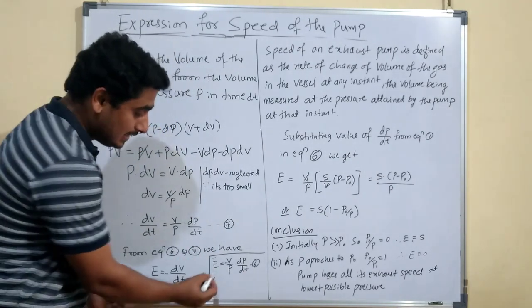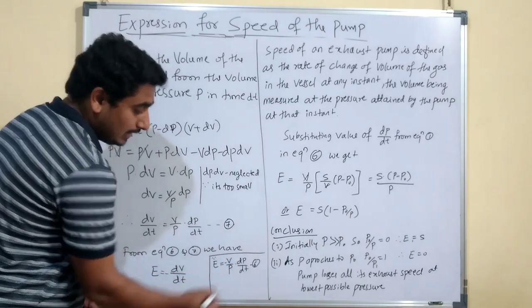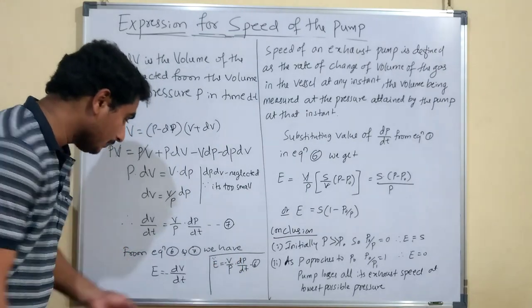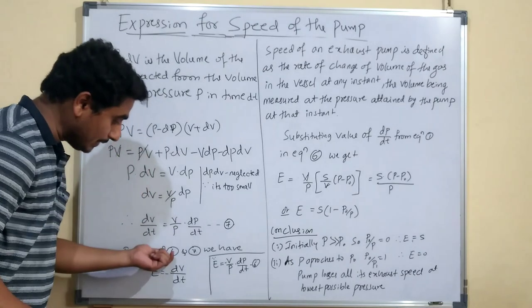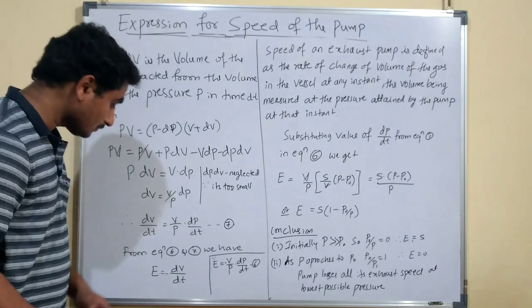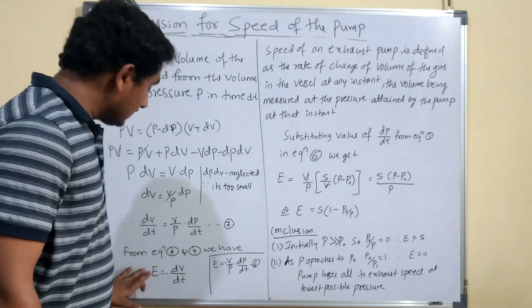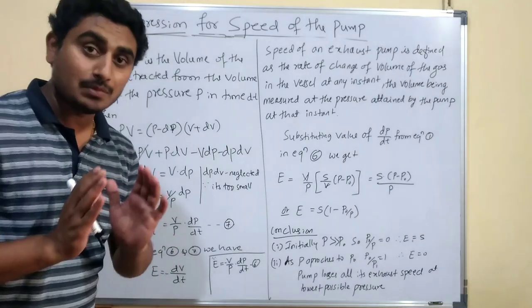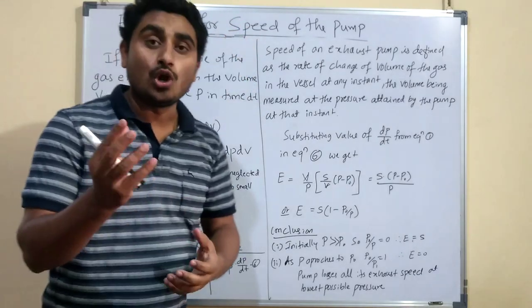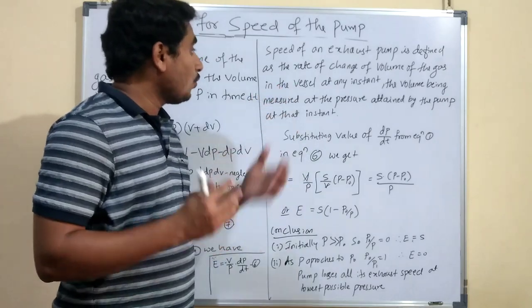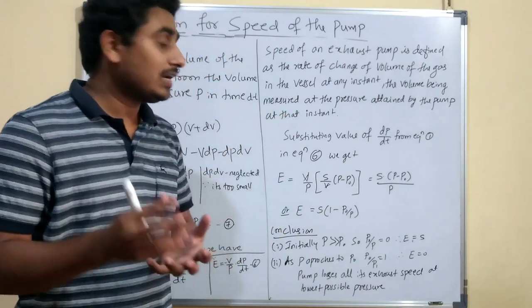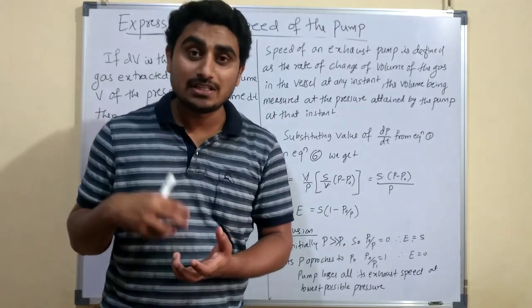From equations 6 and 7, comparing: equation 6 is E = −(V/P)·(dP/dt), and equation 7 gives dV/dt = (V/P)·(dP/dt). Therefore E = −dV/dt. The exhaust pump speed E is defined as the rate of change of the volume of the gas in the vessel at any instant, the volume being measured at the pressure attained by the pump at that instant.